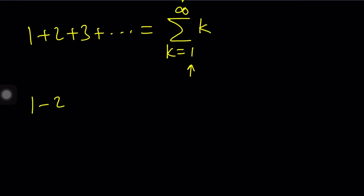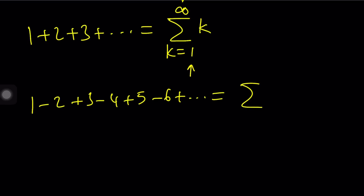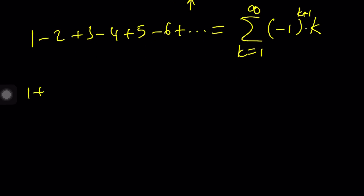What if you had something like 1 minus 2 plus 3 minus 4 plus 5? Do you think this converges? With this expression, we can still use k, but we also multiply by a power of negative 1. Since I need a positive 1 when k equals 1, I put k plus 1 in the exponent. So when k is 1 the term is positive 1, and when k is 2 the term is negative 2. We can express pretty much everything using sigma notation, which is the most important tool here.